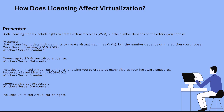How does licensing affect virtualization? Both licensing models include the right to create virtual machines, but the number depends on the edition chosen. Core-based: Windows Server Standard covers up to 2 VMs per 16-core license; Datacenter includes unlimited VM rights. Processor-based: Windows Server Standard covers 2 VMs per processor; Datacenter includes unlimited virtualization rights.